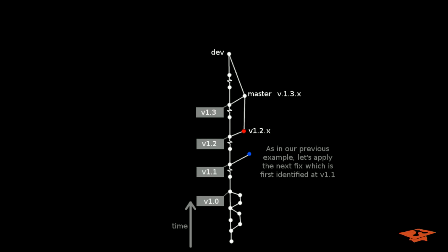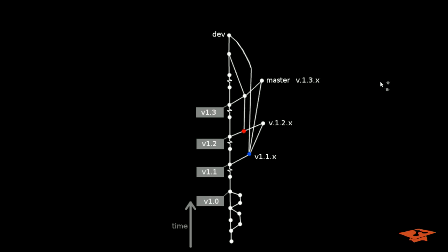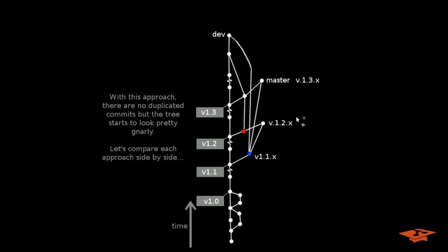Let's add another hotfix — the blue one — to see how this solution scales compared to the previous one. Remember this one was identified first at v1.1 and exists in all branches newer than that. So we create our release branch at that state with the hotfix at the first location in which it appears. Now we need to merge this commit into every release and dev branch ahead of it in time. v1.2.x is here and when we merge it, it moves ahead — it gets a merge commit with two parents. The same thing happens with the master branch and the v1.3.x release branch, and the same thing happens with the dev branch. Now the dev branch and all of these branches have this blue commit content in it. With this approach there are no duplicated commits, but the tree starts to look a little gnarly with all these merge commits.